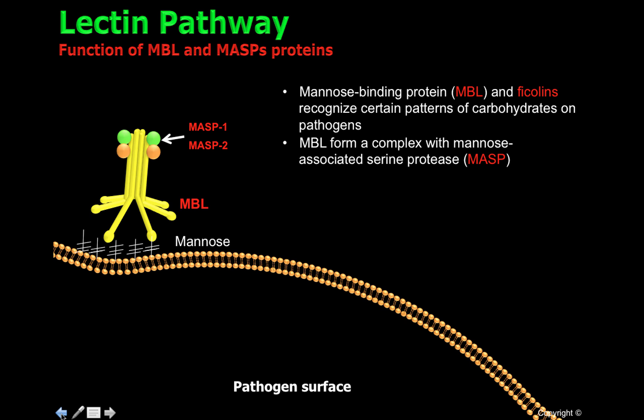MBL forms a complex with mannose-associated serine proteases, or MASPs. These proteases play a fundamental role during the lectin pathway activation.